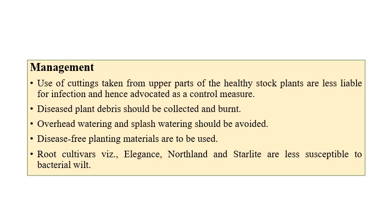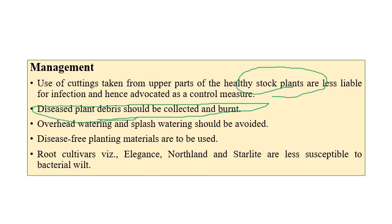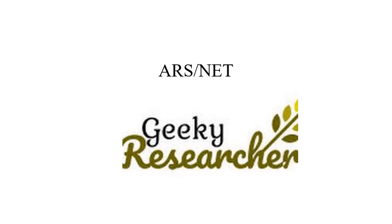For management of bacterial wilt, it is important to select healthy stocks. Any plant debris from the previous cropping season should be collected and burnt. Disease-free planting root stocks should be used for propagation. Root cultivars like Elegans, Northland, and Starlight are less susceptible varieties for bacterial wilt. For exams, expect questions on the causal organisms — not only for flower crops but also for other crops.